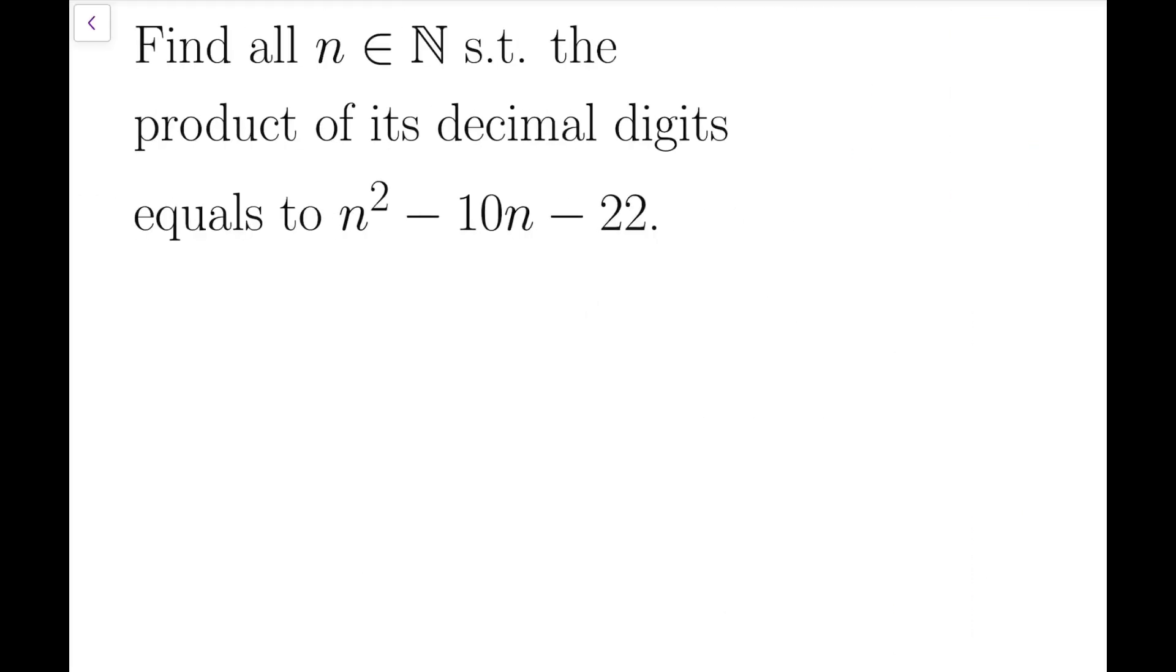The first step to solve this problem is to establish a bound on the number of digits of n in terms of n. For example, if n takes the value 10, then it has 2 digits, or similarly up to 99, and then when it comes to 100 to 199, these numbers have 3 digits.